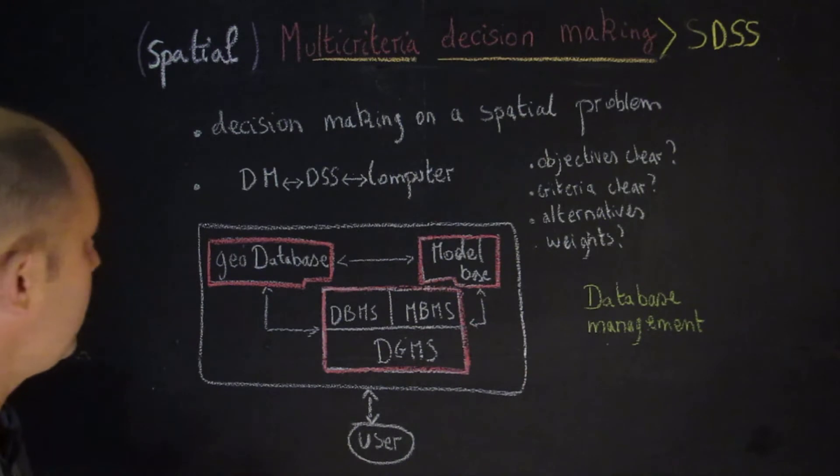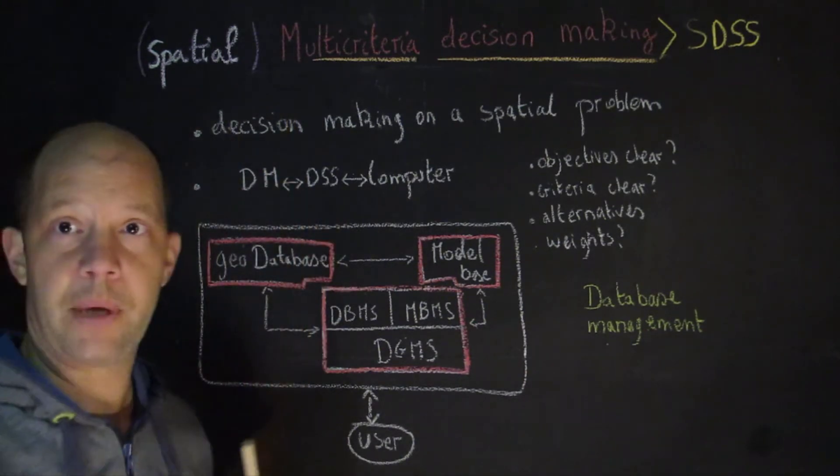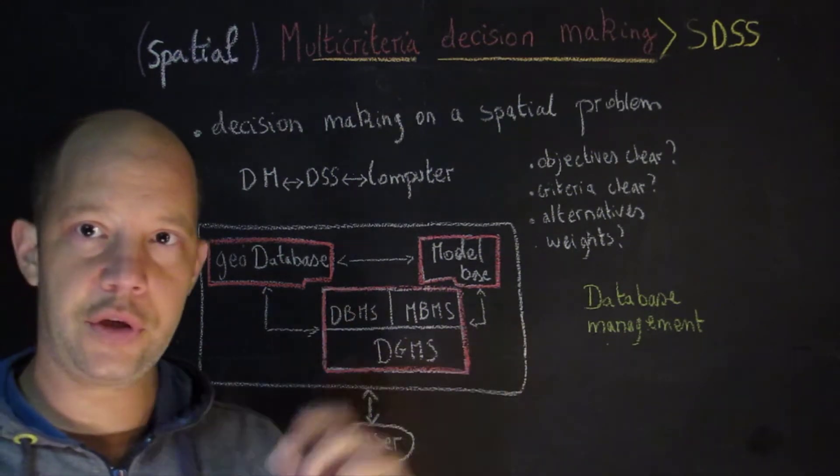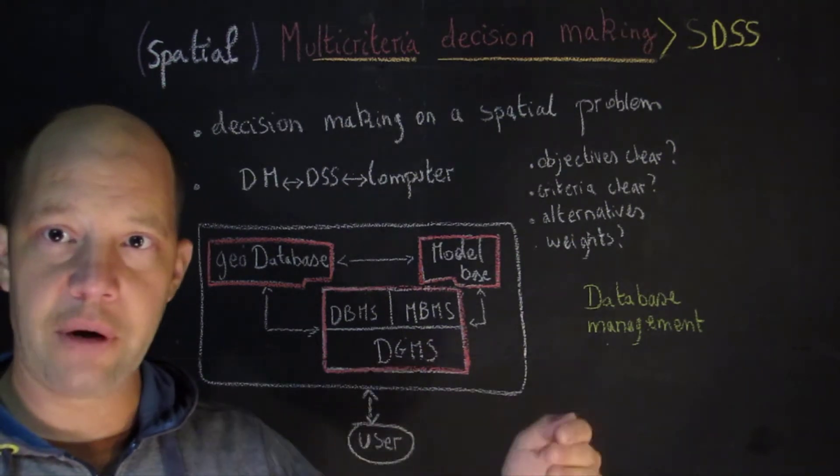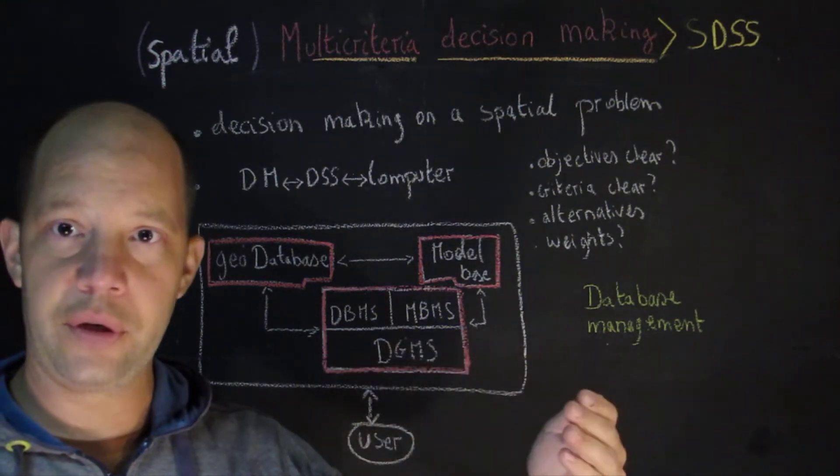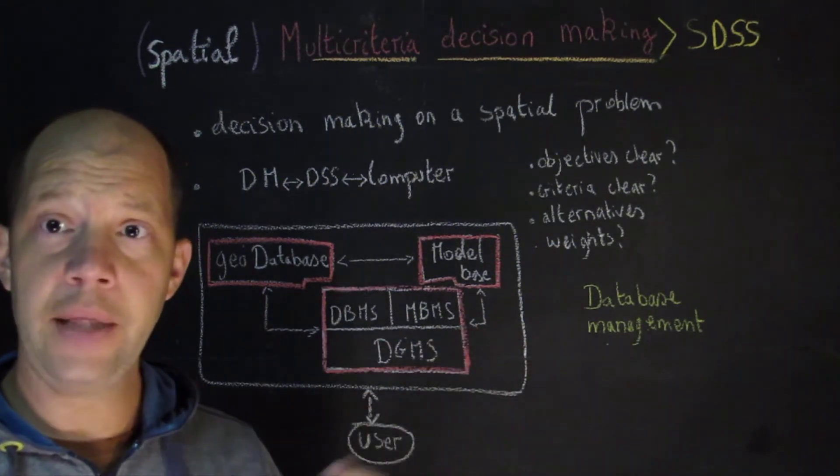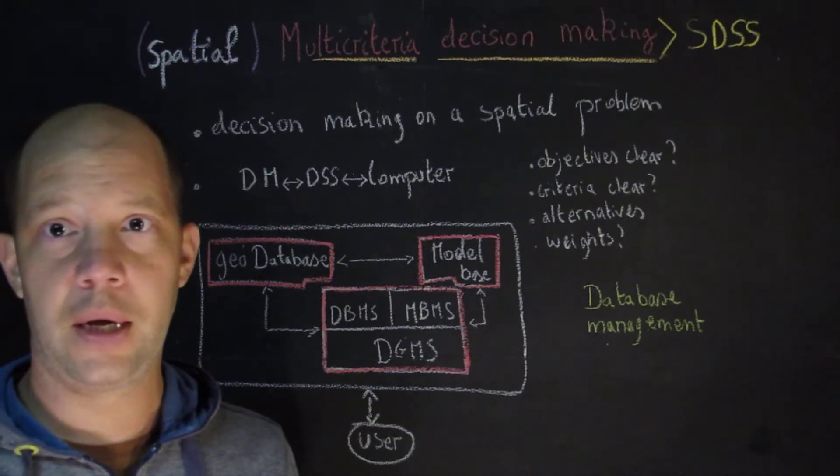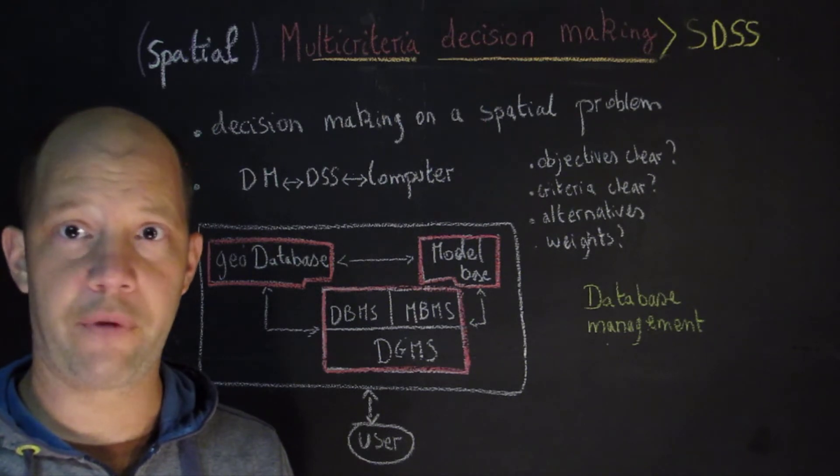A decision support system is the link between the decision maker and the computer. In this decision support system, the decision maker can provide the computer different alternatives, different criterion, different weights, different levels of sensitivity, and the computer will probably provide the decision maker with different alternatives which are ranked according to his or her preferences.